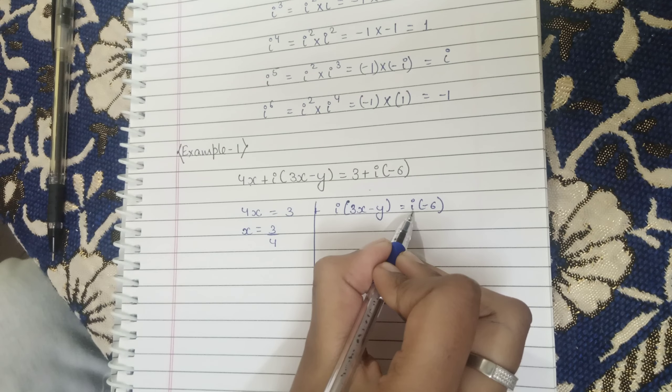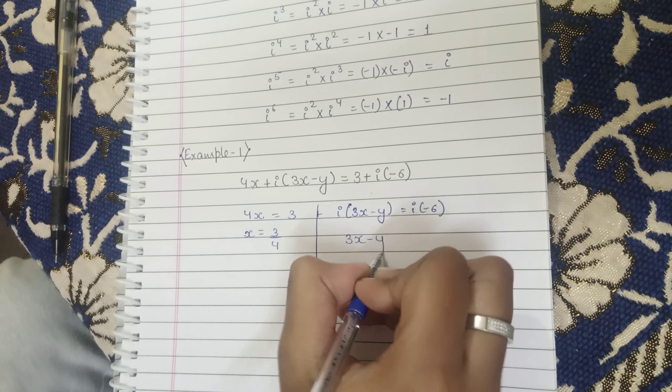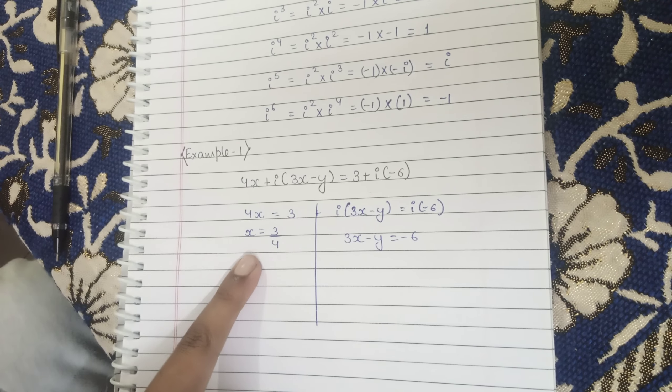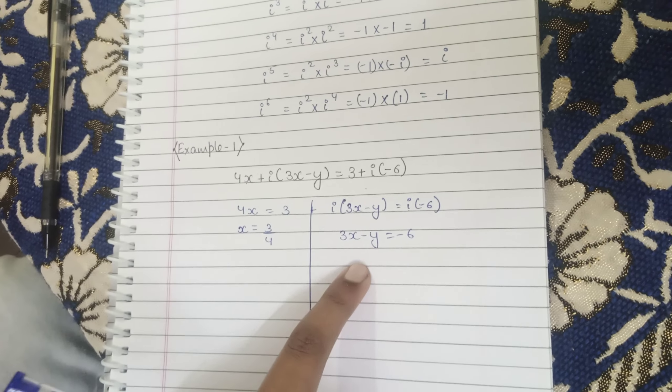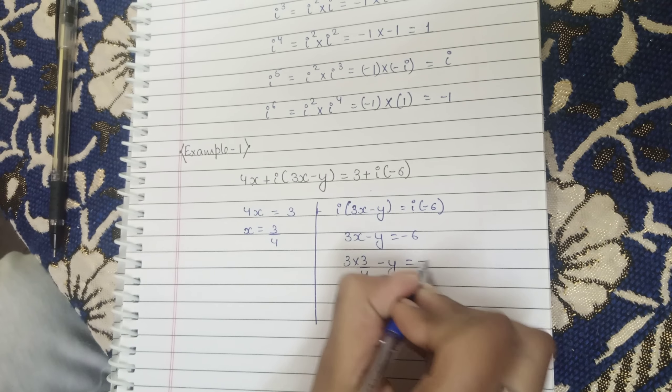While we have the iota on this part, we will put the iota on both sides and the iota will be equal. So we can take the iota, so we will put 3x, 9 by 4 minus y equals to minus 6.